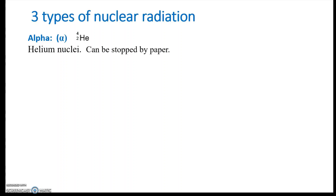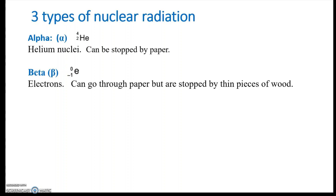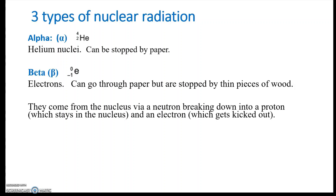Beta radiation is basically a high-speed electron kicked out of the nucleus. It's a little more penetrating than alpha — it can go through paper but is stopped by pieces of wood. Beta particles come from inside the nucleus: a neutron breaks down into a proton, which stays in the nucleus, and an electron, which gets kicked out. When the nucleus has too many neutrons, this is how it reduces that count.